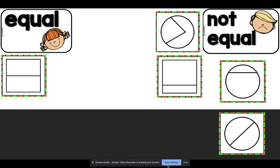This circle is also not equal. The two parts that it has are not the same. It is not in half. But what about the last circle?